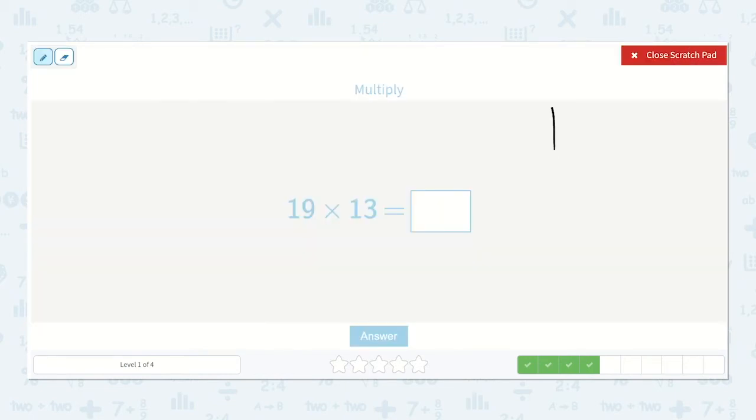Now we have 19 times 13. Do you remember how I said always start on the right side? So we're going to start on the right side with our 3. Do 3 times 9, which is 27. My 7 goes in the ones place, and my 2 goes in the tens place. Then we multiply 3 times 1, which is 3, and then 2 more, which is 5.